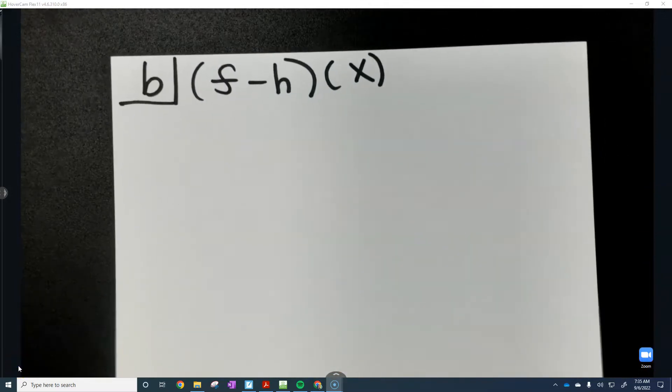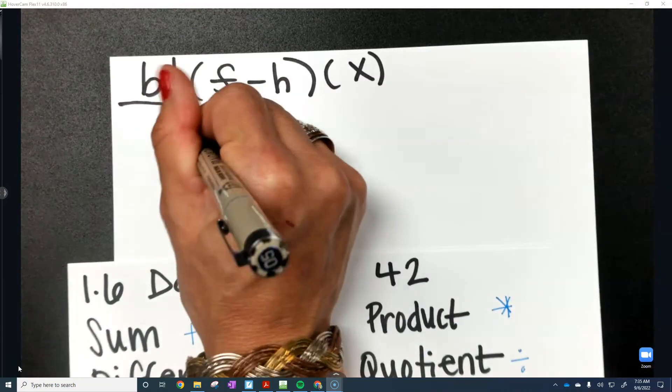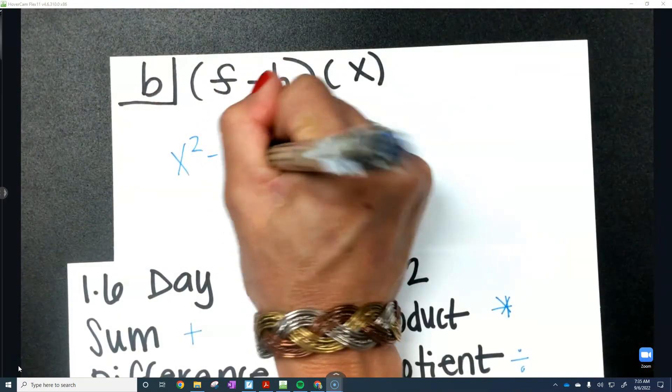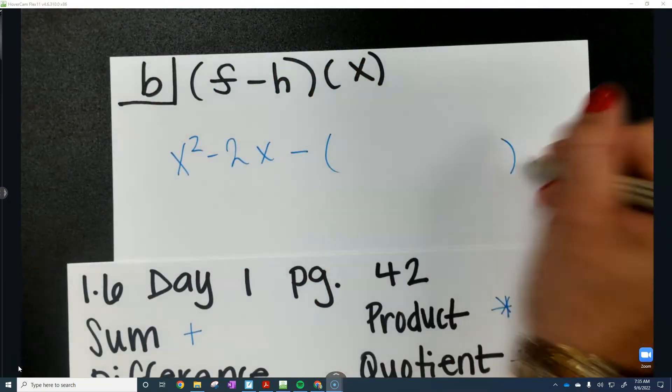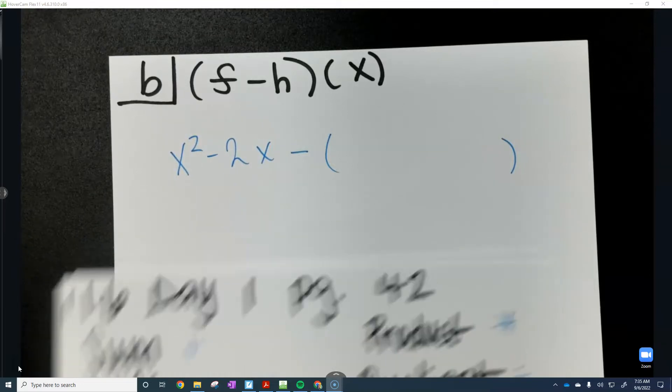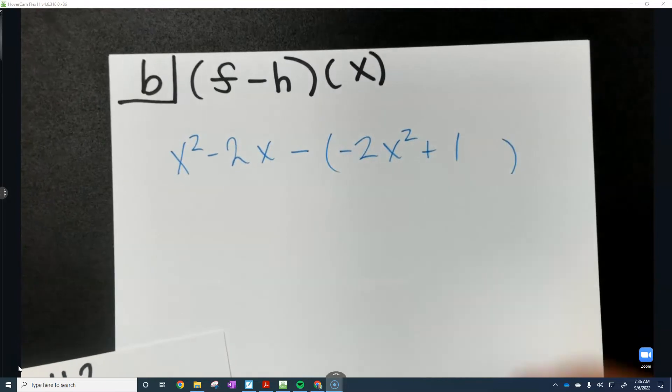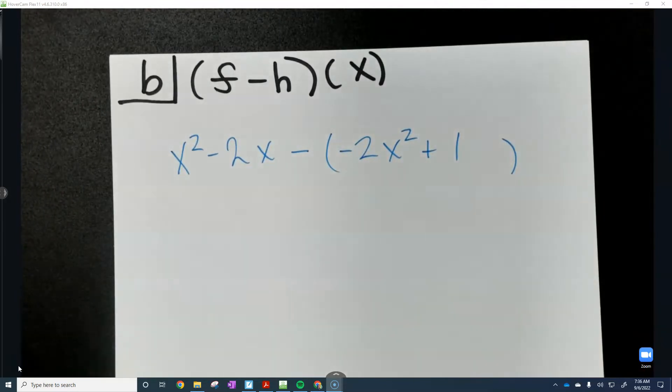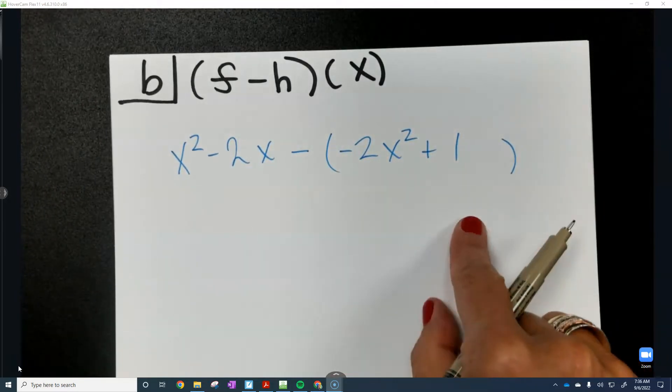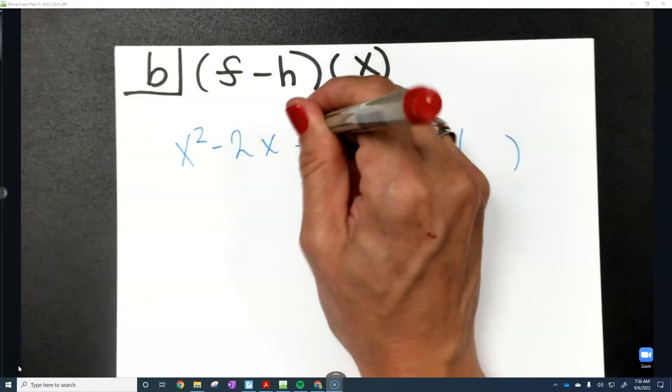Remember, now we're going to subtract h from f. So remember, f is x squared minus 2x minus. And I'm still going to drop in parentheses to show that I'm substituting in h. And remember, h is negative 2x squared plus 1. So remember, when you subtract, you're really combining the opposite. So we totally have to distribute and combine like terms.